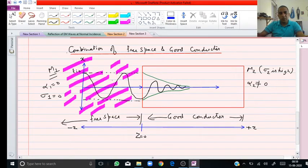Hello friends, now we will study the case in which we consider EM wave propagation from free space to a good conductor. That is, EM wave is incident from free space in this direction into a good conductor.